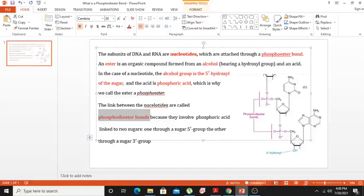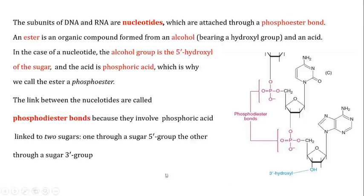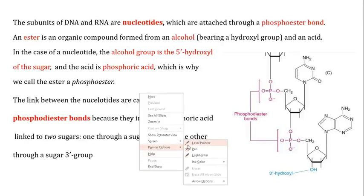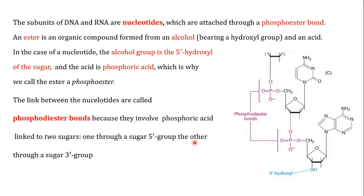Welcome back to this next video. In this particular video I am going to tell you what is a phosphodiester bond. When you talk about DNA and RNA, they are made from nucleotides, and these nucleotides are connected to each other through a phosphoester bond — or more specifically, a phosphodiester bond. But first, you need to understand what is a phosphoester bond.